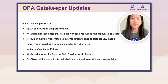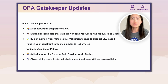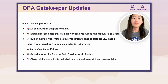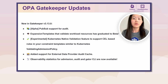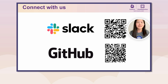For Gatekeeper updates new in 3.13: with the new alpha pubsub feature, you can subscribe to a pubsub service to consume audit violations. The expansion template feature to validate workload resources like deployments is now beta. A new experimental Kubernetes native validation feature allows you to write CEL-based rules in your constraint template similar to Kubernetes validating admission policy. The external data feature now supports caching of responses from external data providers. Observability statistics for admission, audit, and Gator CLI are now available. Come and join the community on Slack or get help.